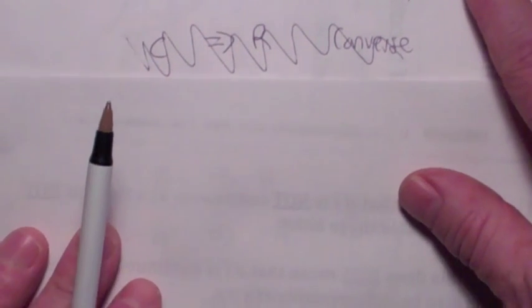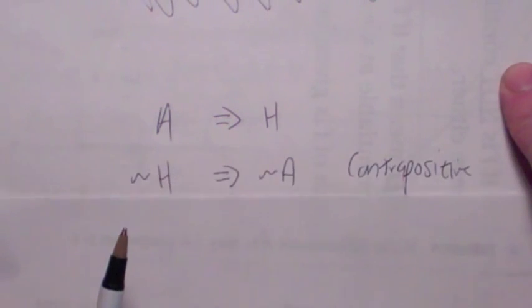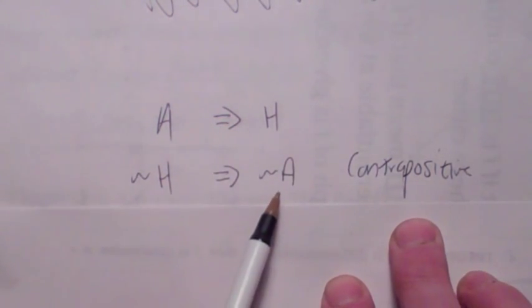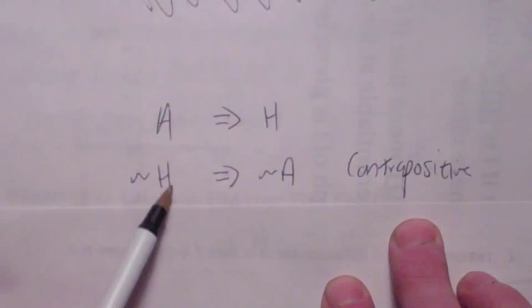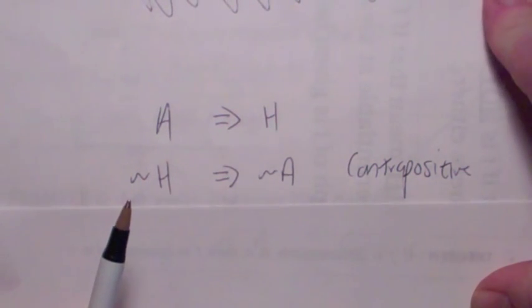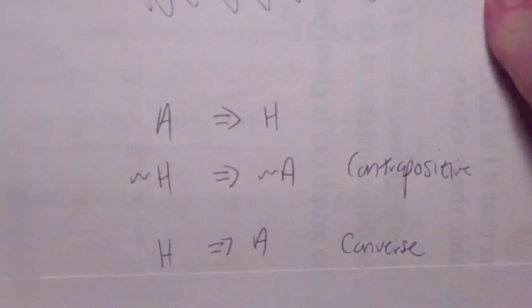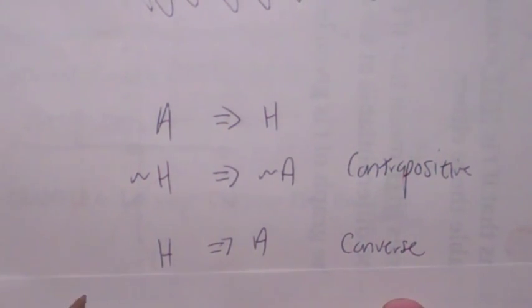Here's another example. If you get an A in this class, you did the homework — that's a conditional statement. The contrapositive would be: if you don't do the homework in this class, you won't get an A. These two things mean exactly the same thing. The converse would be: if you do the homework, then you're guaranteed an A — and of course, we know that's not true.